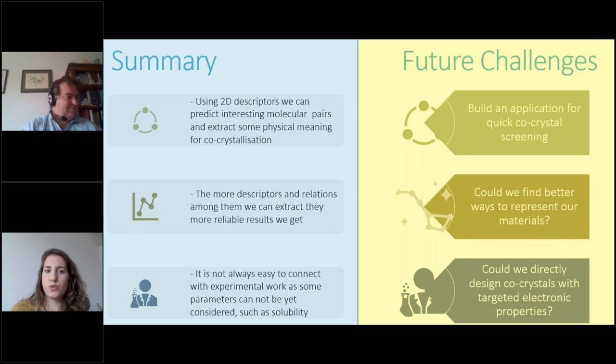To summarize, we used two-dimensional descriptors, and we managed to predict some interesting molecular pairs and extract some physical meaning for the co-crystallization. Then we found out that the more descriptors in the relationship we can extract, then we get the more reliable results using the deep learning approach. And of course, it's not always easy to connect machine learning with experiment because there are some parameters that cannot be considered such as solubility. And my future work now is to build an application that can be more widely used, and then maybe to find a way to directly predict electronic materials. To combine the machine learning with the optimization part, to predict materials with electronic properties directly.